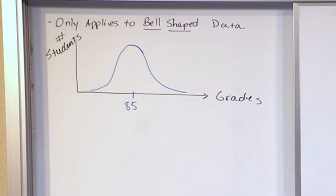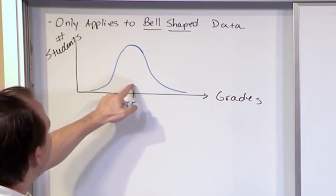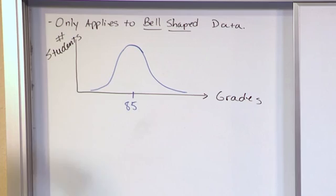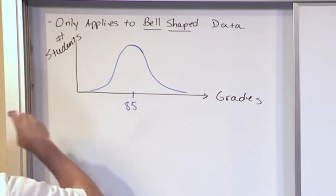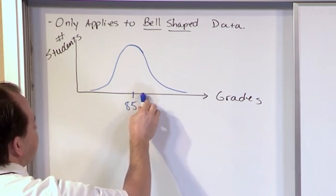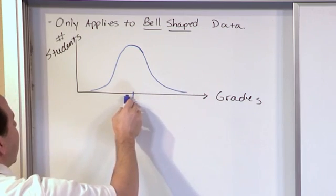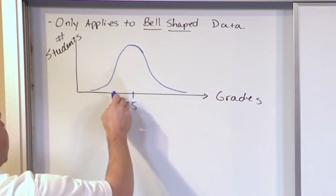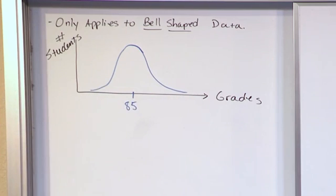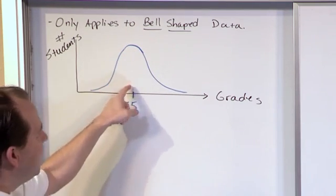What this means is that most of the data — you can see this is number of students on the vertical axis, so the taller this curve is, the more people scored that score. Over here at 85 you have 86, 87, 88, 89, 90, all the way up to 100. And on the other side you have 84, 83, 82, all the way down to the lowest grades on the test. So that means because the peak of the curve is right on top of 85, most students scored right around that average value.